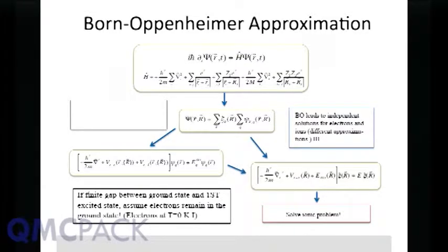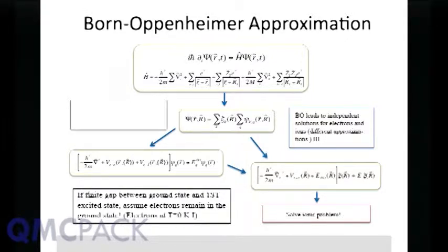GW is basically perturbation theory for optical properties. The typical way GW is used is within some approximation — you're typically doing solids where you know the structure, so you don't need to solve the full ionic problem. Within a given ionic position, you do mean-field theory with density functional theory, and GW would be a perturbative correction on top of this. DFT optical properties are typically very poor because of self-interaction; GW corrects those deficiencies by using RPA and a screened Coulomb potential.